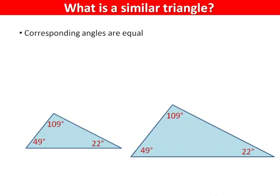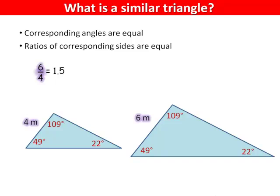In similar triangles, all corresponding angles are equal. The ratios of corresponding sides are also equal. 6 corresponds to 4, 12 corresponds to 8, and 15 corresponds to 10.